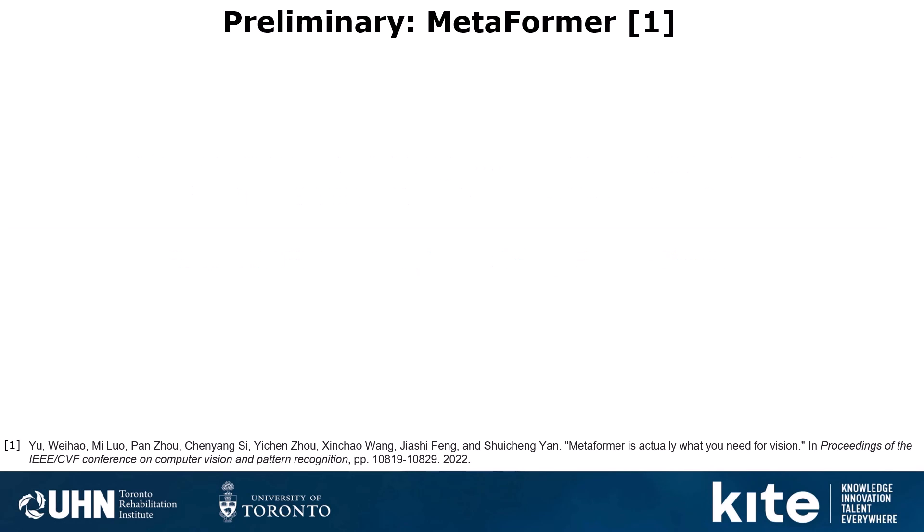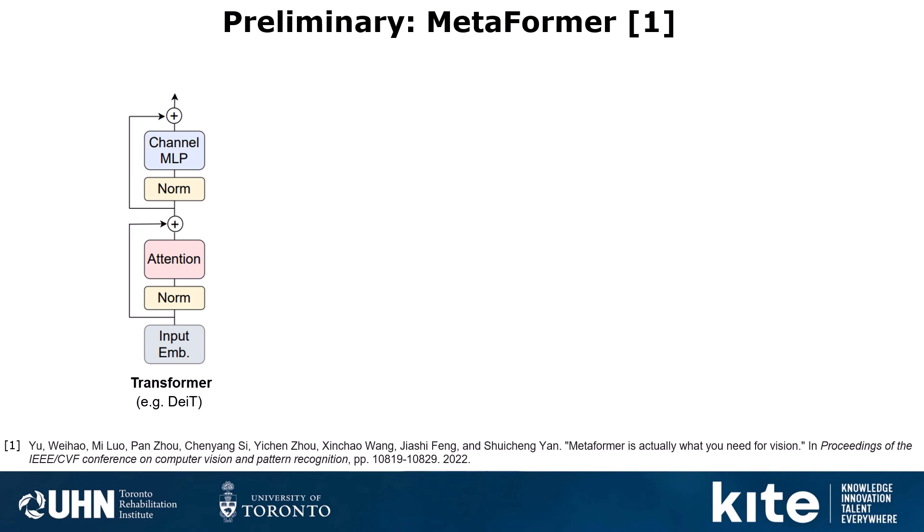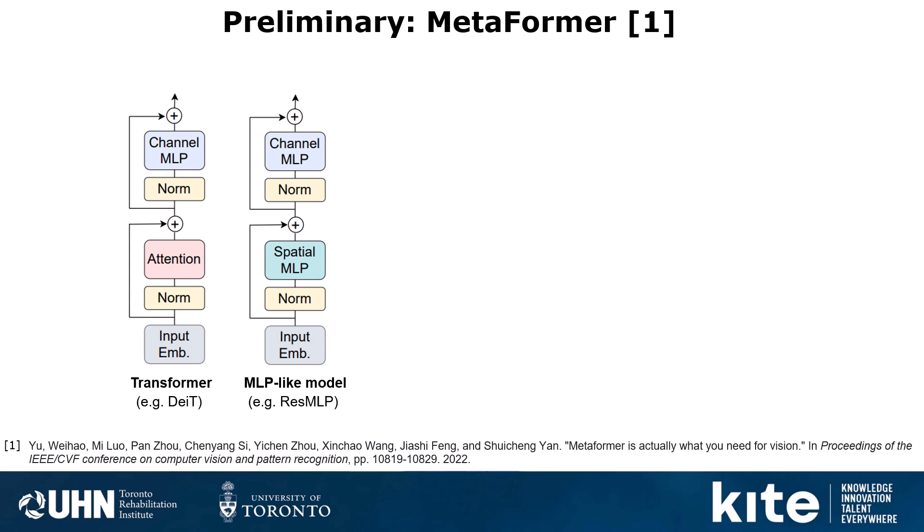The paper MetaFormer is actually what you need for Vision from CVPR 2022 proposes an idea that says we can consider Transformer as having two main blocks. One of them is Attention, which is responsible for mixing the information among tokens, followed by Channel MLP, which is applied on each token separately. There have been some attempts, like MLP-like models, that replace Attention with Spatial MLP.